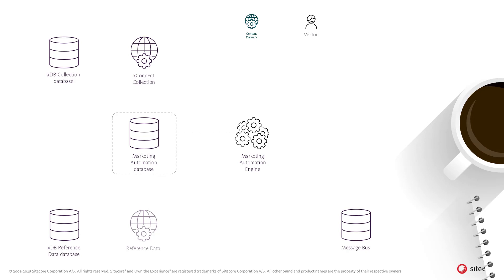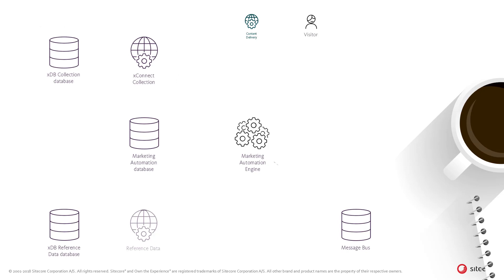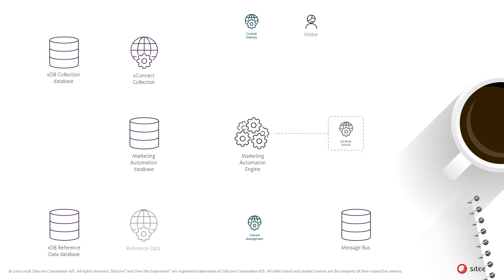When the contact is enrolled, the Marketing Automation Engine runs the business logic defined in the appropriate activities for the contact. This can include updating the contact's data or facets through the XConnect Collection Service and creating new Marketing Automation interactions. Activities can include sending personalized emails through the Experience Manager by adding messages to the messaging bus database. The engine can also be extended with custom activities that run any business logic and notify or pull data from external services.